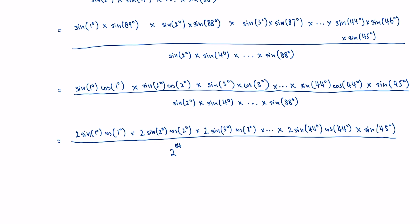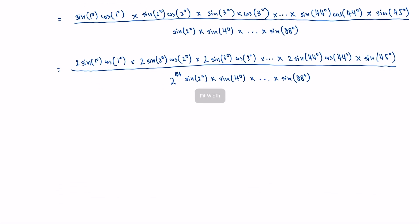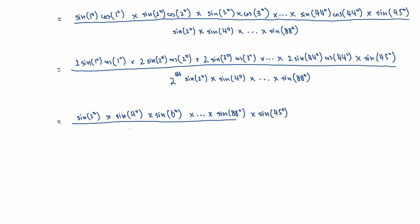Now we apply the double angle formula: 2·sin(θ)·cos(θ) = sin(2θ). So the numerator becomes sine of 2 degrees, times sine of 4 degrees, times sine of 6 degrees, all the way up to sine of 88 degrees — all the even degree sines. Sine of 45 degrees remains unchanged. The denominator also hasn't changed; we've just rewritten the numerator.